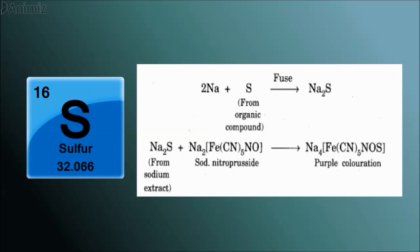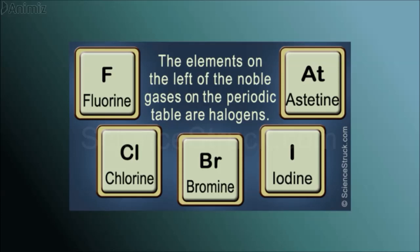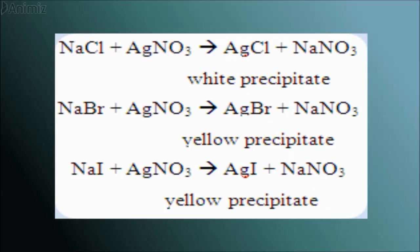Now coming to halogens, the halide salts, when treated with silver nitrate, produce the corresponding precipitates, which indicate the presence of particular halogen atom in the given organic compound.